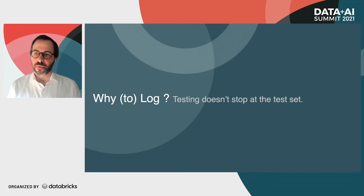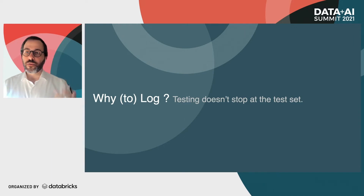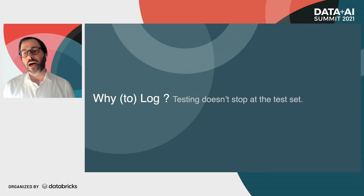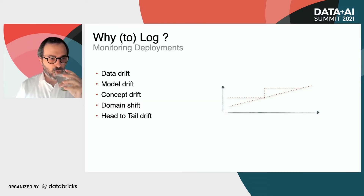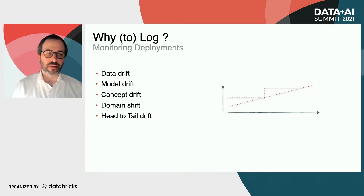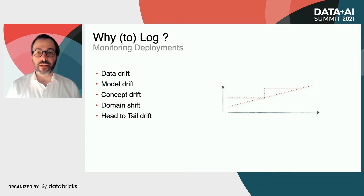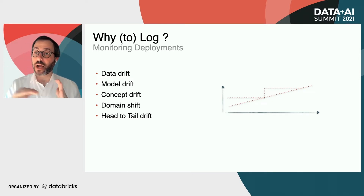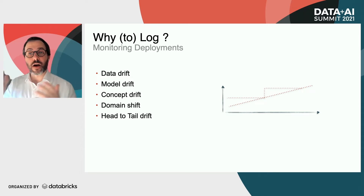Why do we want to log? One lesson we've all learned over the past decade or more is that testing doesn't stop at your test set. When you deploy your model, you may encounter problems you didn't expect at the beginning because of changes in the datasets and changes in the targets. It's very important to keep those in mind when you have a deployed model and may not have access to the validation data. When it comes to monitoring deployments, there are a lot of names for modifications affecting your model: data drift, model drift, concept drift, domain drift, or something I like to call head-to-tail drift. These may happen as a certain shift over time in your model — either a sudden shift, a gradual one, or even one with a seasonal dependence — either due to the problem you're looking at or some other behavior you're not aware of.